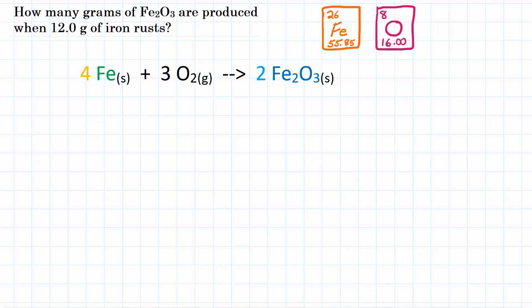We're going from mass of iron, Fe, to the mass of iron oxide or rust or Fe2O3. So the problem gives us 12.0 grams to start with and that is of iron. And we want mass or grams of Fe2O3.